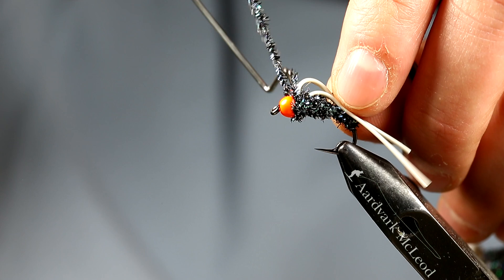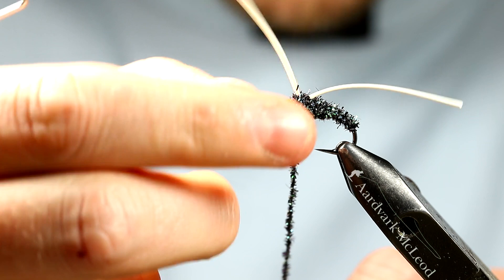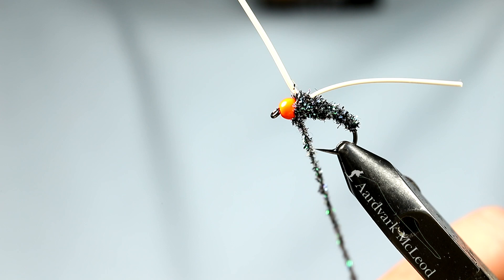Be a little bit careful with the fritz because the core is not that strong and just tease it down. We will super glue behind the head. So just tease it down and it eventually just drops in behind the bead like that. Snip off the fritz as close as you can. And that is basically the fly done.